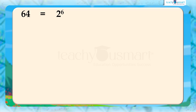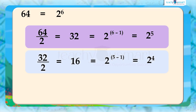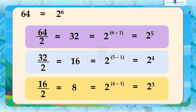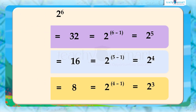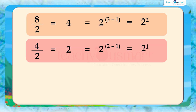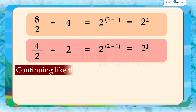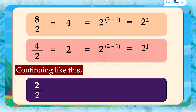By observing this pattern, can you find anything special? Yes — the exponents decrease by 1 each time the number is divided by the base. So by continuing this pattern, we get 2 by 2 equals 1, equals 2 raised to 1 minus 1, equals 2 raised to 0.